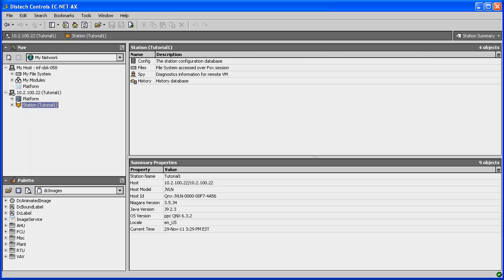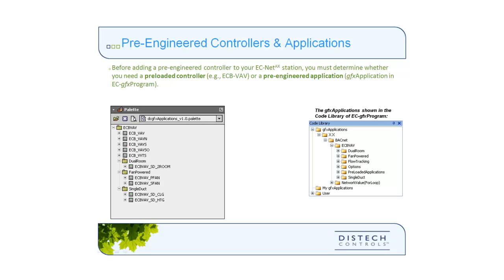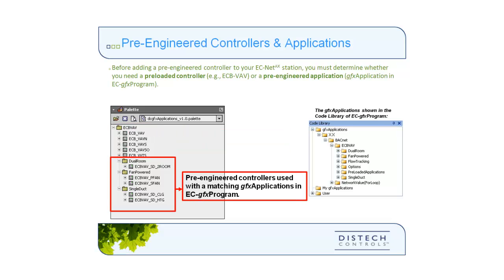Now we will move on to adding pre-engineered controllers to an ECNet-AX station. Before adding pre-engineered controllers, you must determine whether you need a pre-loaded controller or a pre-engineered application. The DC GFX Applications palette contains these pre-engineered controllers. The first part of the list consists of pre-engineered controllers used with pre-loaded controllers — drag and drop one to obtain a working device complete with code and graphics in minutes. The second part consists of pre-engineered controllers used with GFX Applications, which contain a complete library of pre-engineered sequences embedded within ECGFX Program and must be downloaded into the controller using the synchronized feature.